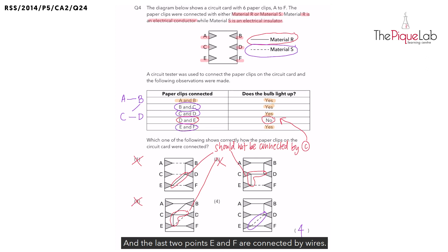Points C and D are connected by wires. And the last two points, E and F, are connected by wires. So the bulb lights up because there was a closed circuit that allows electricity to flow through when all these points were tested.